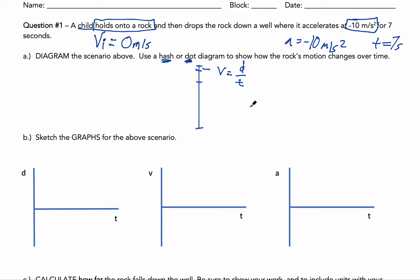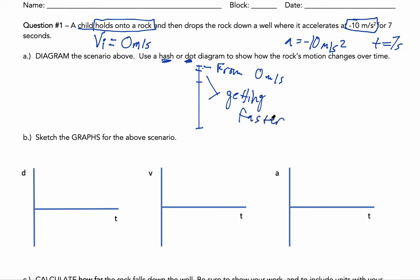You can label the diagram if you want — something like 'starting from rest' or 'getting faster' — but the diagram itself makes it clear. Now for the graphs: we're sketching graphs for this scenario. We can assume our displacement starts at zero, because the rock is zero meters away from the child when they're holding onto it.